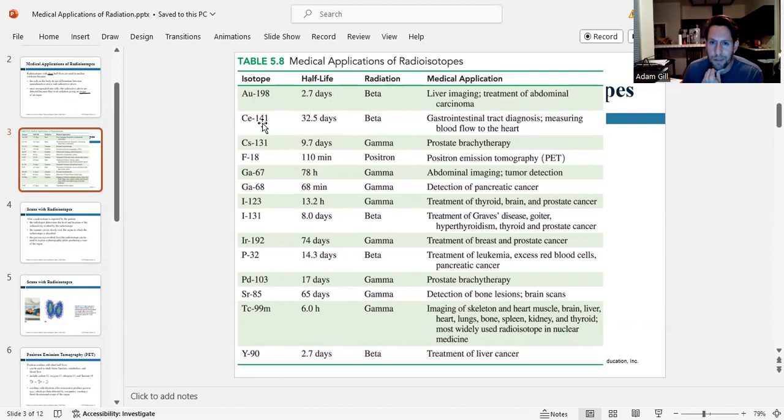Cerium-141 has a half-life of 32.5 days. It's a beta emitter. We use this for diagnosing gastrointestinal tract issues and measuring blood flow to the heart.